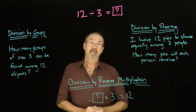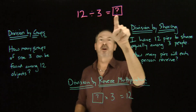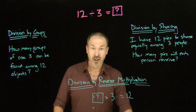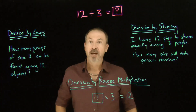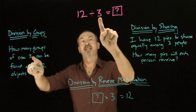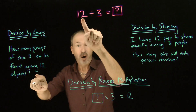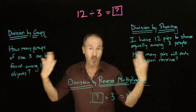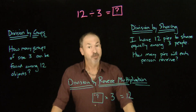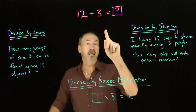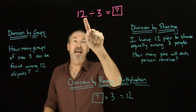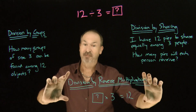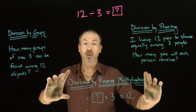So what are these three ways? Let's look at a concrete example: 12 divided by 3. One interpretation is division by groups — how many groups of size 3 can I find among 12 objects? More mathematically, we're really asking: what times 3 gives the answer 12? That's thinking about division as reverse multiplication, doing multiplication backwards.